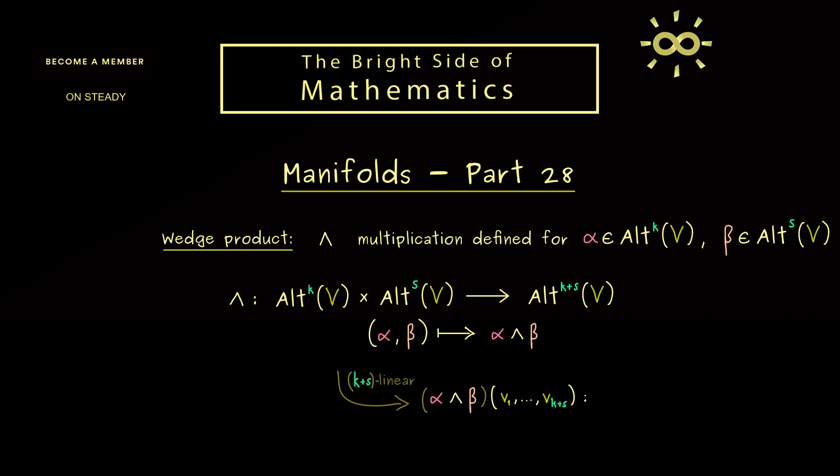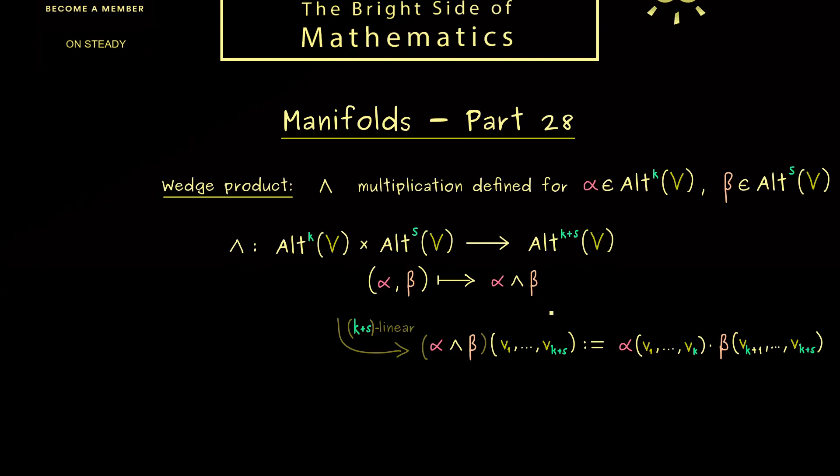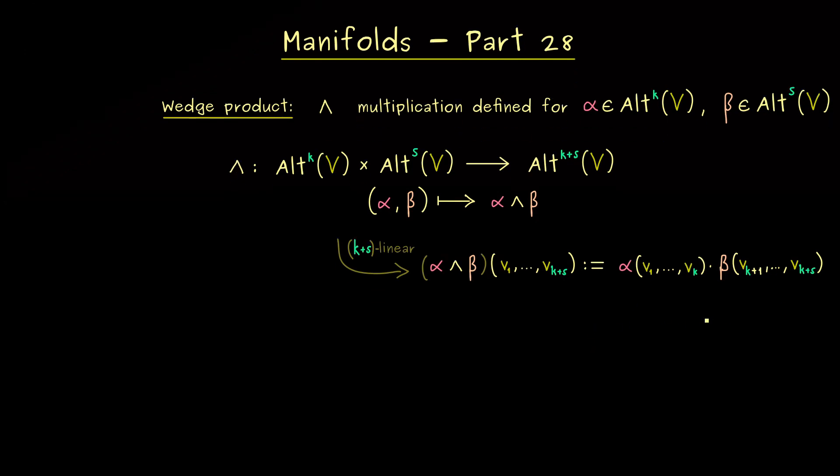And now the question is, how would you define this number here by using alpha and beta? So obviously we could just use alpha putting in k vectors, and then we multiply with beta where we use s vectors. More concretely here, we go from v_{k+1} to v_{k+s}. So this is definitely a nice definition that gives us a k+s linear map. However, the problem is it's not an alternating map with this definition.